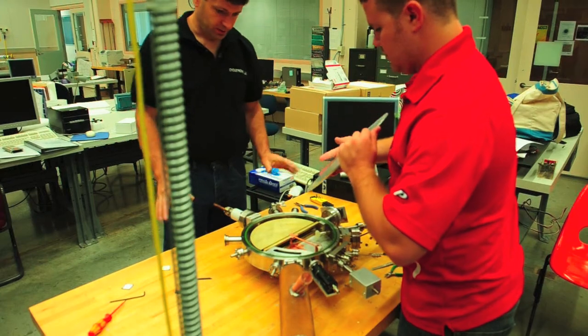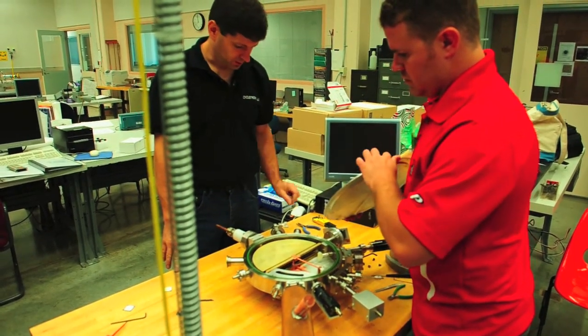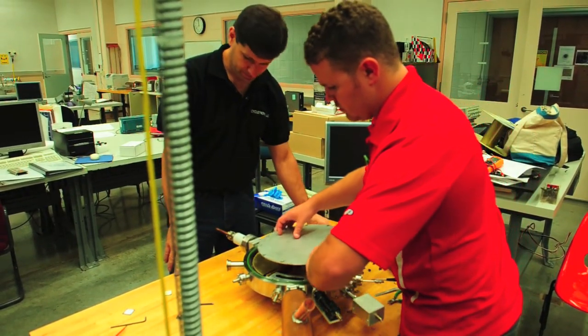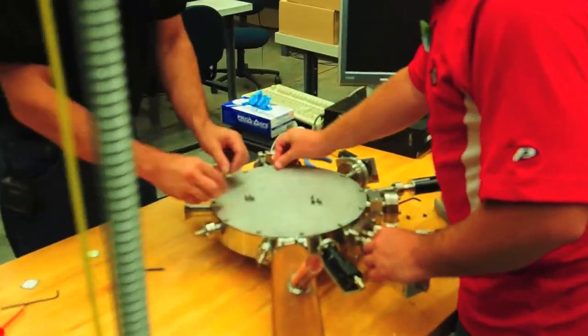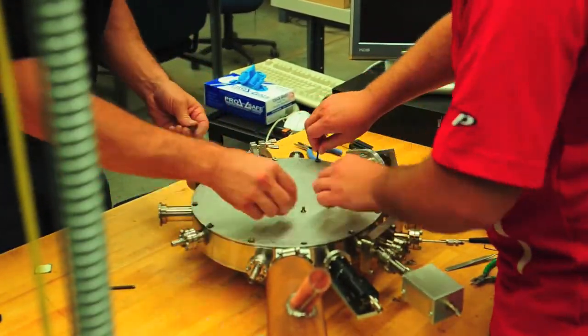Okay, so we have replaced the phosphor screens and we are going to put the lid back on and seal it up. To ensure uniform compression of the O-ring, we tighten the lid screws following a star pattern.